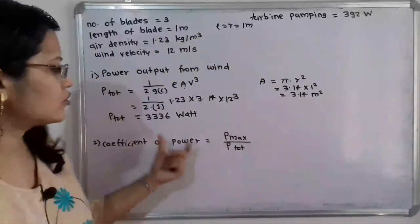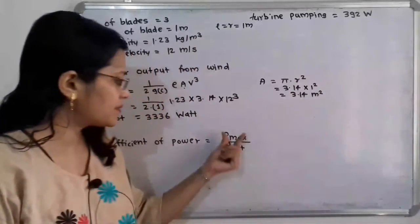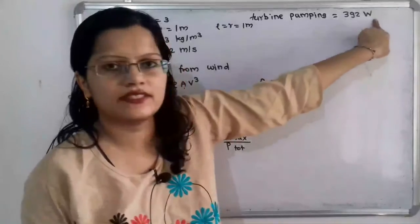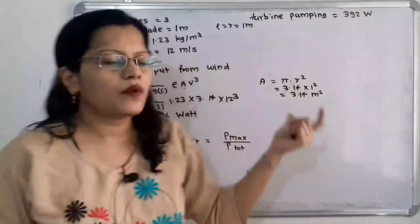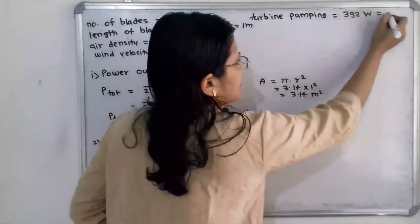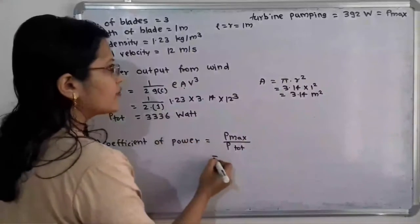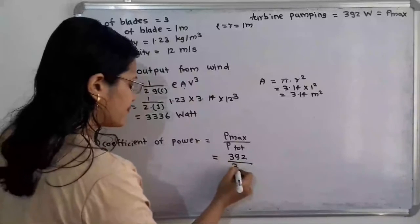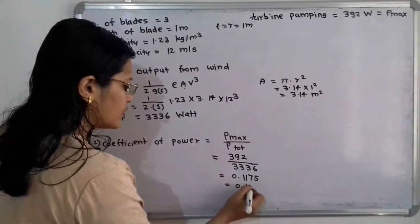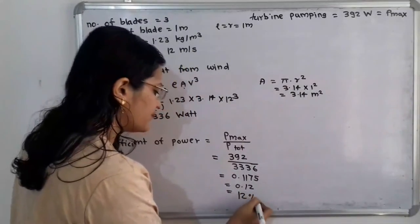Now we find the coefficient of power, which is Pmax divided by P total. The turbine is pumping out 392 watts, so we take that as Pmax. Coefficient of power equals 392 divided by 3336, which equals approximately 0.12, or 12%. This is the final answer.